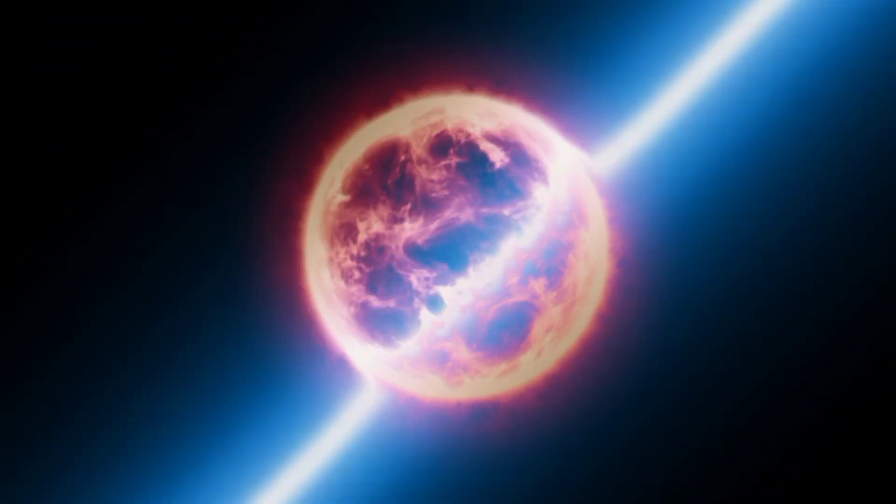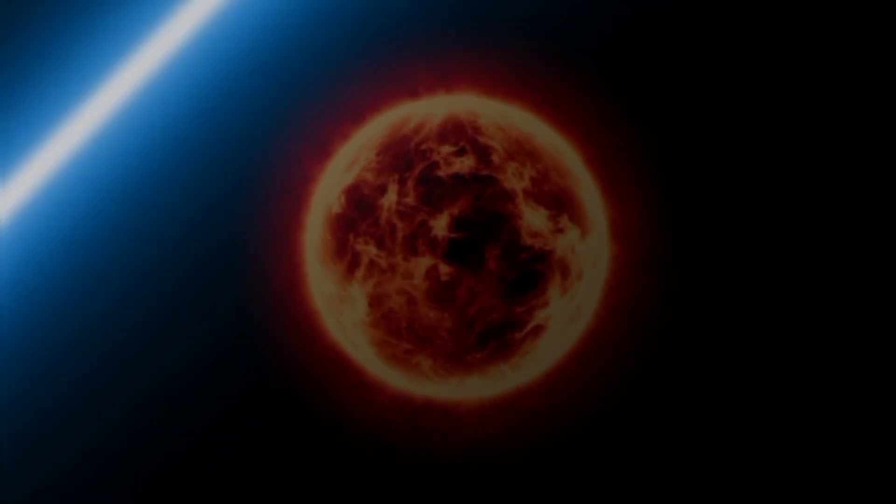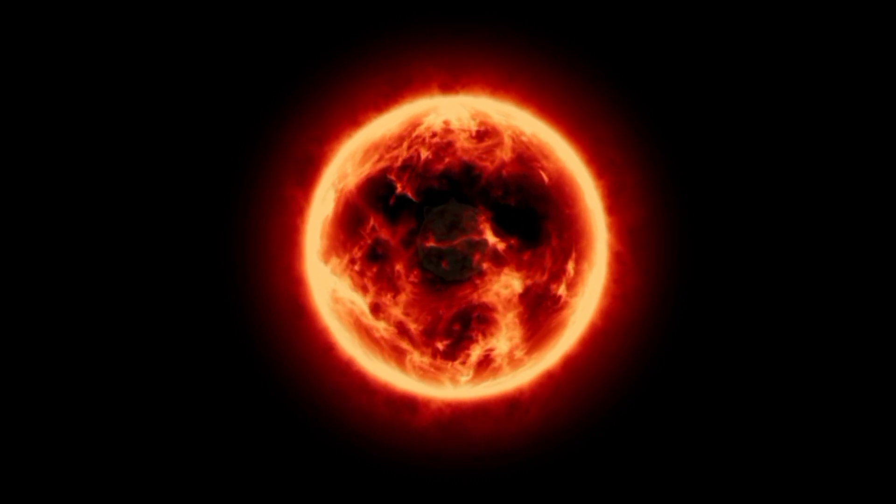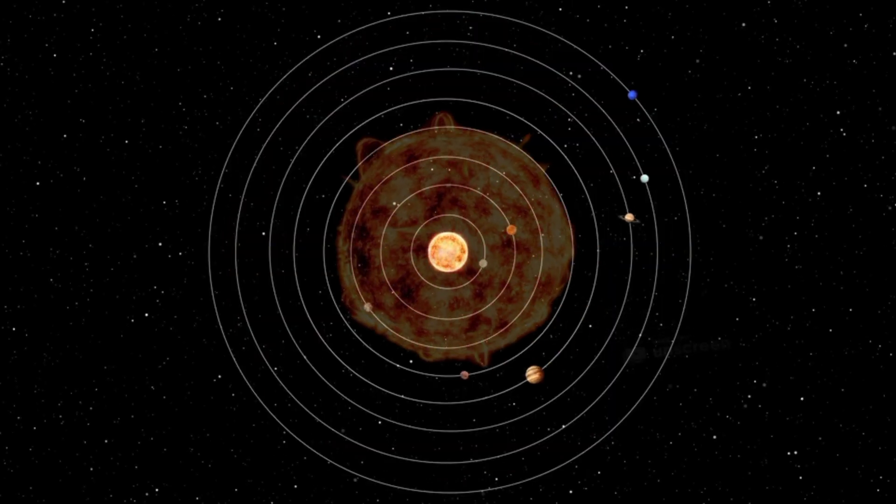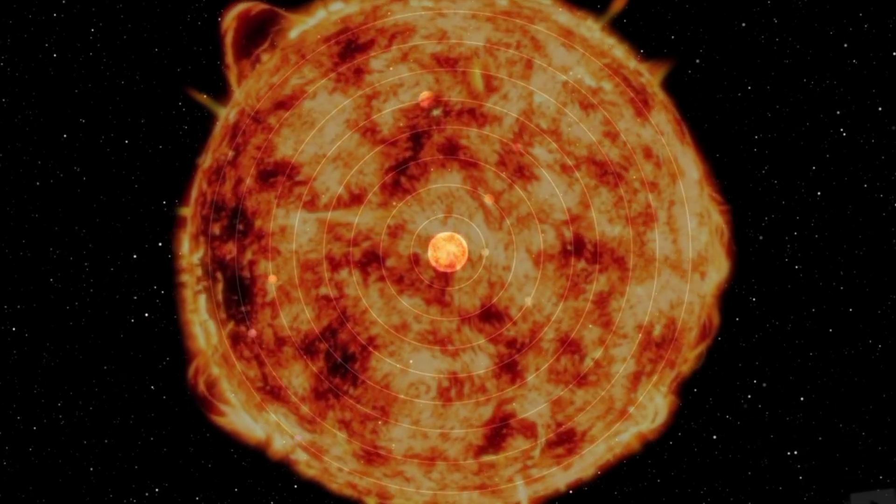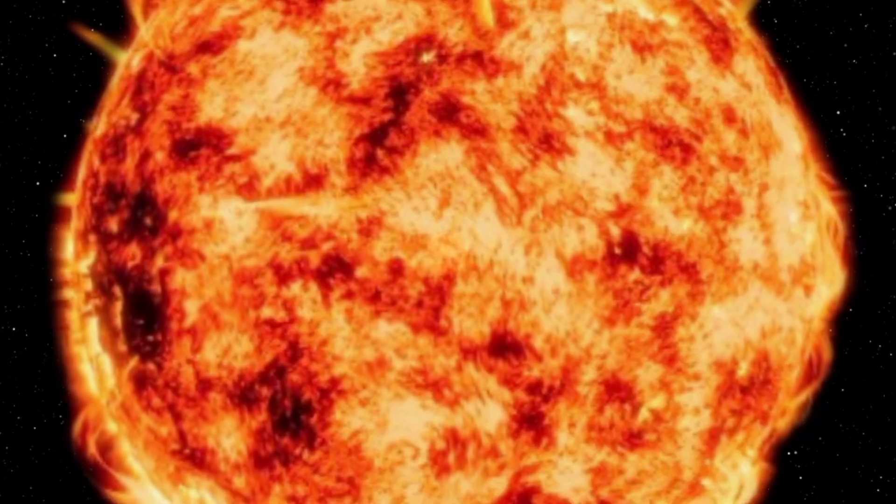VY Canis Majoris defies intelligibility. Stretching more than 2,100 times the diameter of our sun, it could exceed the orbit of Mars and consume the entire inner solar system. If placed at the center of our solar system, its outer edge would graze Earth's orbit.